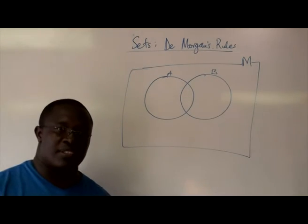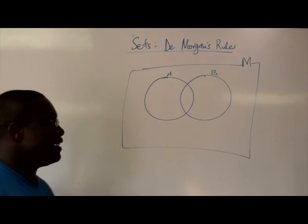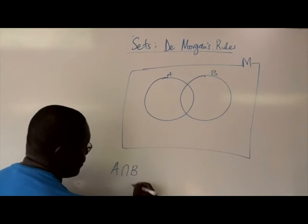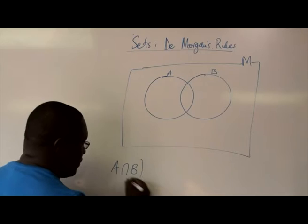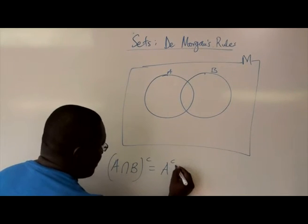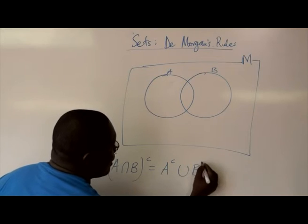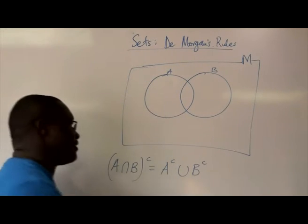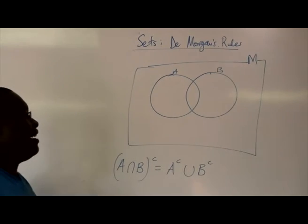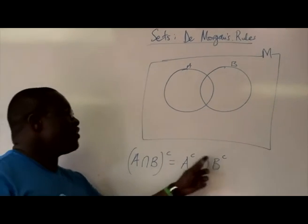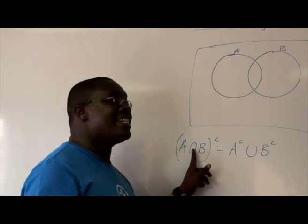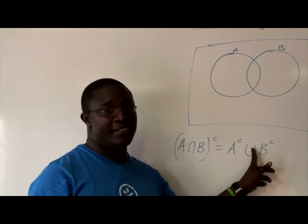According to De Morgan, it says that (A intersection B) complement is equal to A complement union B complement. Basically what he has done is, by distributing the complement, he has transformed the intersection into a union.